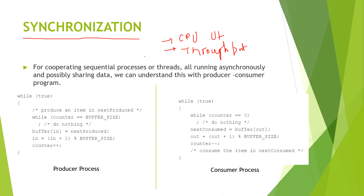Now, what are the problems we are getting in our modern operating system that require us to implement synchronization? We will discuss this with the help of the producer-consumer problem. The producer is producing goods and putting them in a bucket.